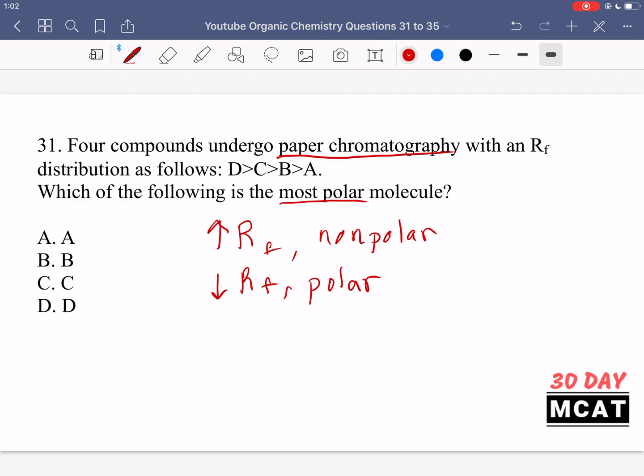In this case we're asked which one is the most polar, so that would be the one with the smallest Rf. Rf tells us how far the spot for our molecule traveled compared to how far the solvent front went. The one with the lowest Rf is the most polar because it stuck to the polar stationary phase. So in this case A is our correct answer.